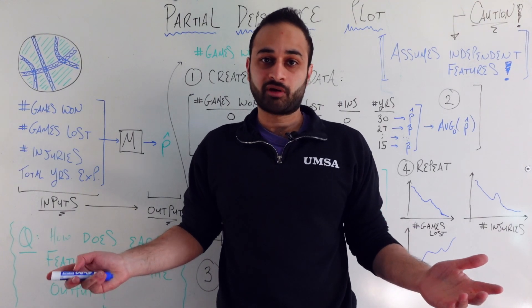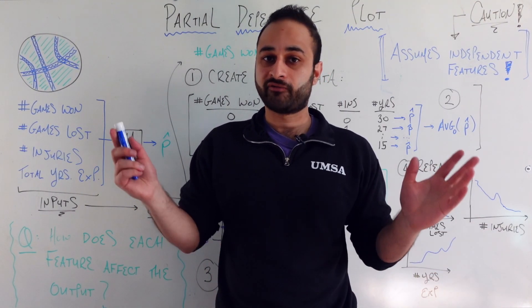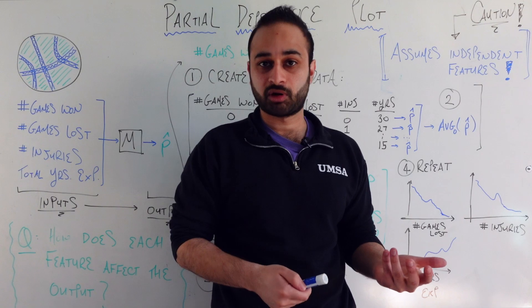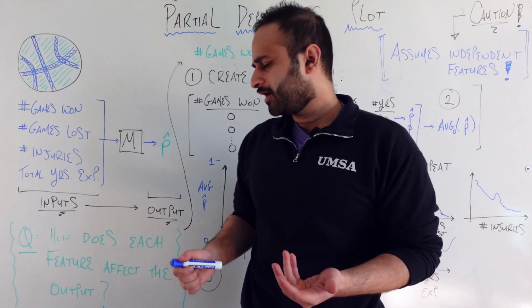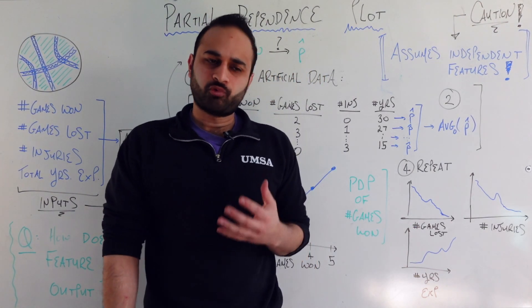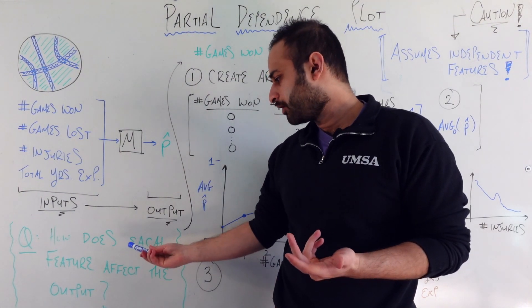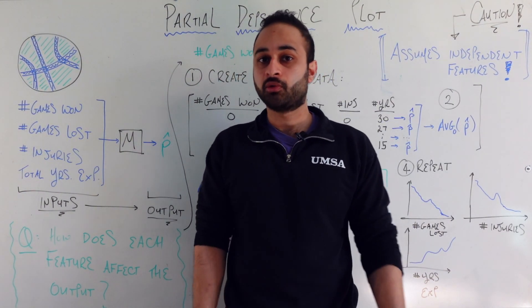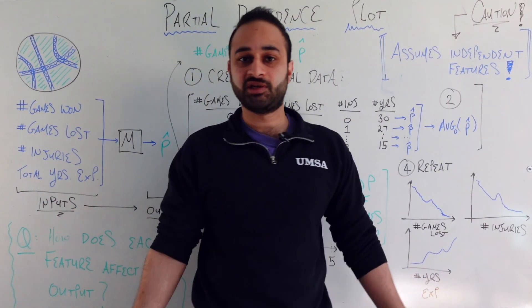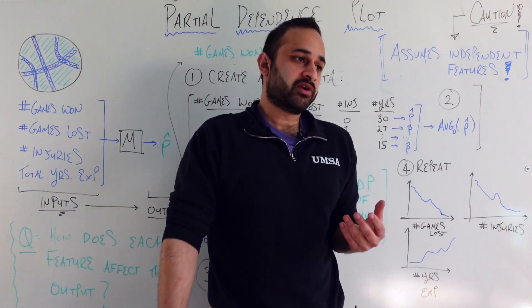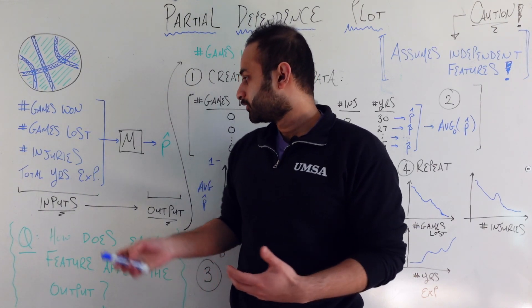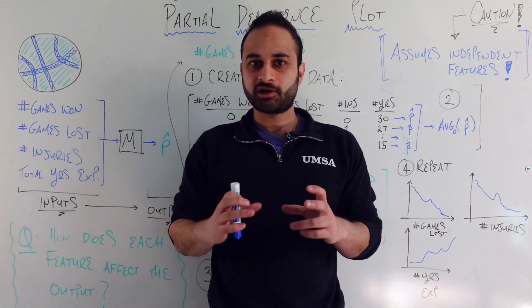Let's say the model is performing well by whatever metrics you choose — accuracy, precision, recall — and you bring it to the board. The board is a little skeptical, as they should be, because they don't fully understand how it works. They come to you and say: can you at least tell us how each feature affects the final predicted probability? How does the number of games won affect it? If you can give us a better understanding of that, we'd feel more comfortable using this model in practice.